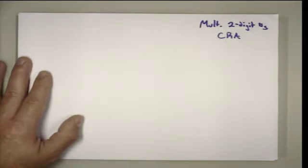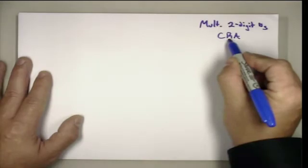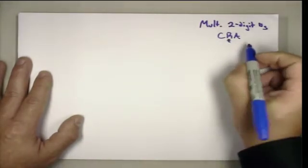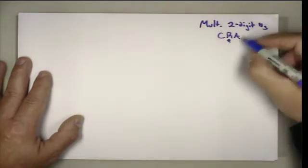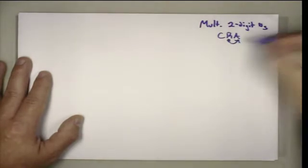In another video we looked at two different types of representations for multiplying two-digit numbers. What we're going to do in this video is connect one of those representations to the abstract algorithm. That's important because as we teach across this sequence of instruction, we have to make explicit connections for students so they see how the thinking stays the same even though the way they're representing the problem changes.